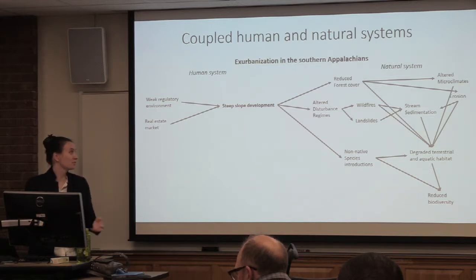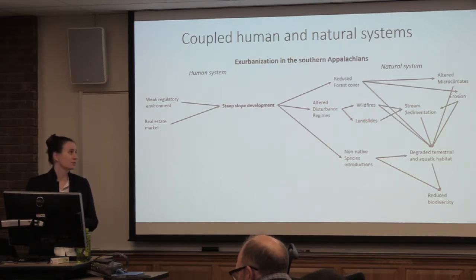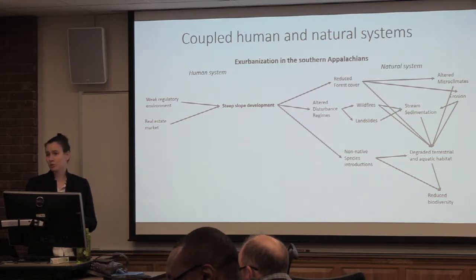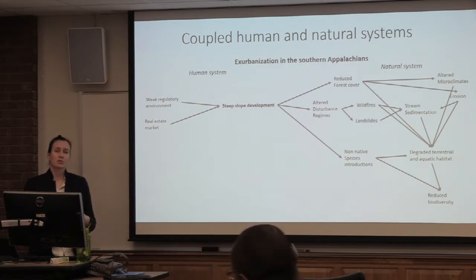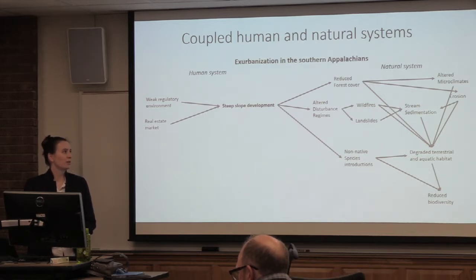When you have really severe fires, they can lead to worse stream sedimentation and erosion. Landslides can be caused by disturbances on steep slopes — that's actually been shown. And non-native species introductions — like the hemlock woolly adelgid that killed off all the hemlock trees in the Southern Appalachians, or the chestnut blight which killed off all the chestnuts — can really change the forest environment and affect both terrestrial and aquatic habitat. The net outcome of all this is reduced biodiversity.